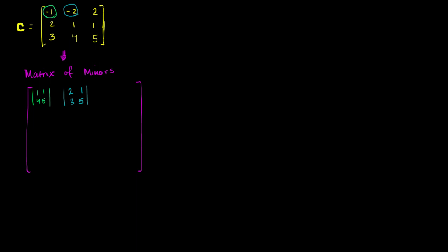Let's do this next element. It's going to be replaced with the determinant of — get rid of this row and this column — 2, 1, 3, 4. We're a third of the way done, at least with this first stage.